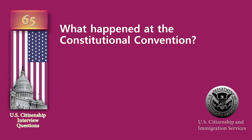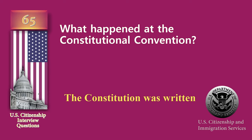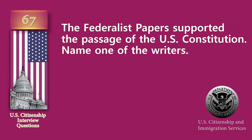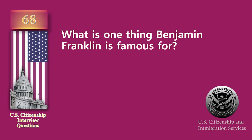What happened at the Constitutional Convention? The Constitution was written. When was the Constitution written? 1787. The Federalist Papers supported the passage of the U.S. Constitution. Name one of the writers. James Madison. What is one thing Benjamin Franklin is famous for? U.S. Diplomat.